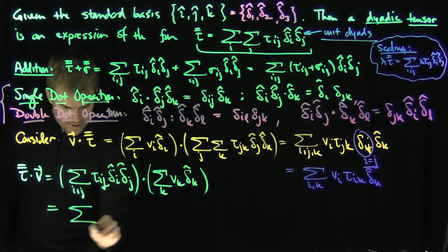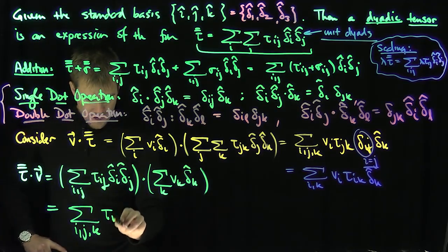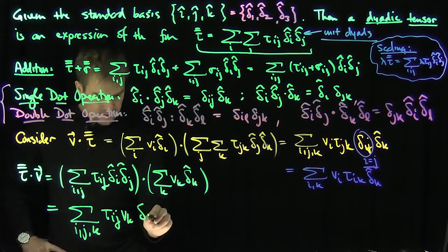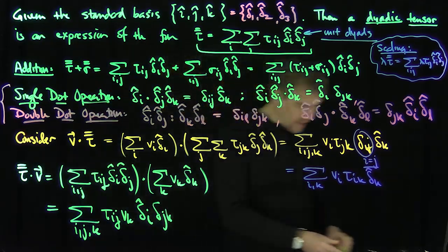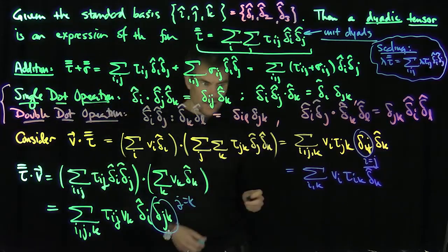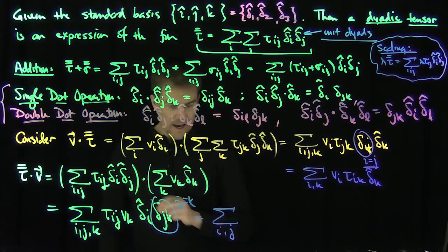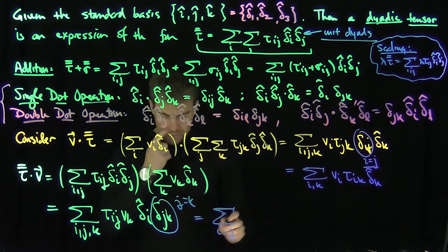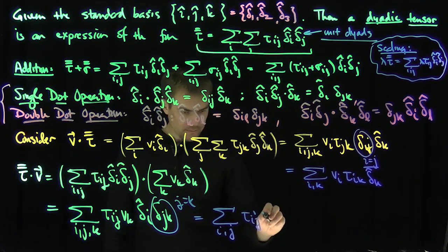This gives the sum over i, j, k of tau_ij v_k with delta-j-hat dot delta-k-hat giving delta_jk, leaving delta-i-hat. The delta_jk replaces all j's with k, so j must equal k. Contracting, the sum becomes the sum over i, j of tau_ij v_j delta-i-hat.